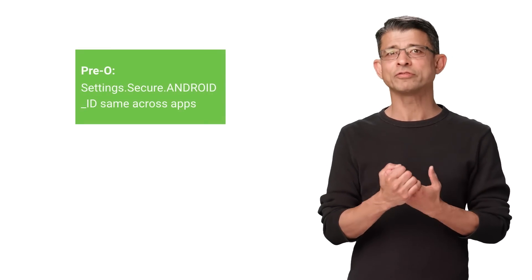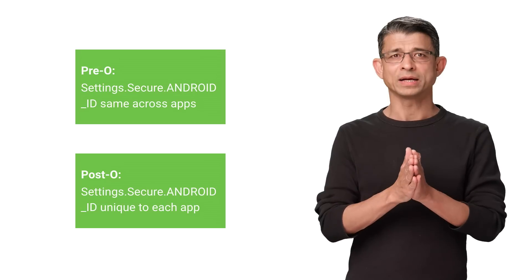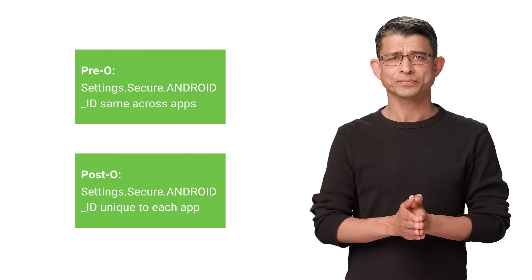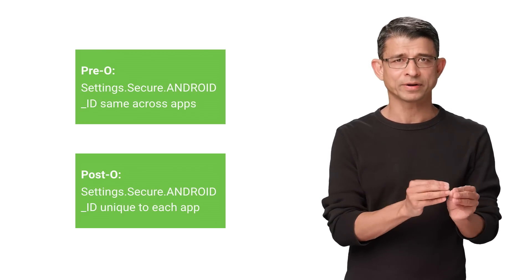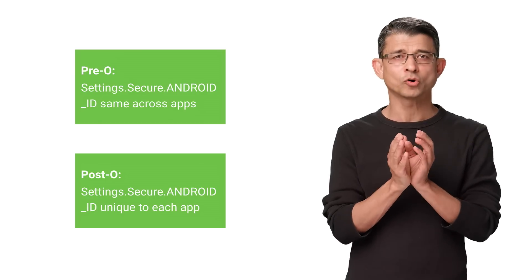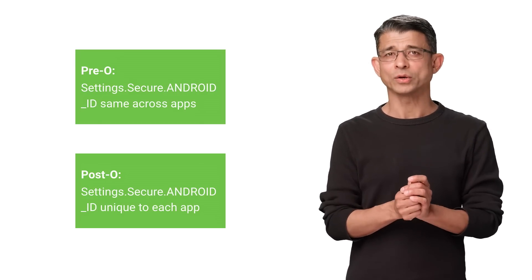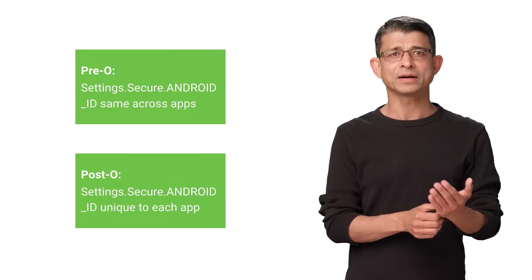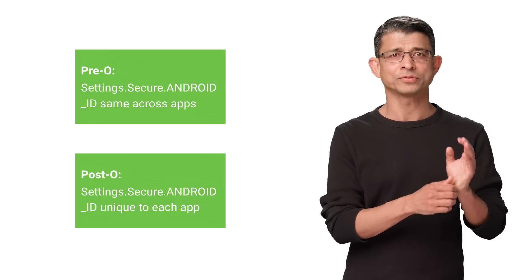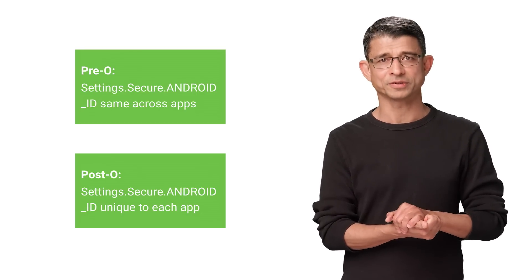We're constantly working to improve user privacy, so even if you don't target O, you will notice a change with Android ID in Settings.Secure. In O, it will return a different identifier for different apps. In other words, it is now scoped per app per user. This new value will persist across app reinstalls, but for simple standard systems to help monetize app use, use the user-resettable advertising ID instead, provided by Google Play services.